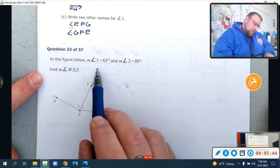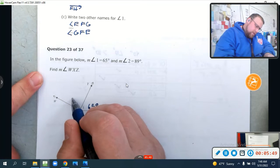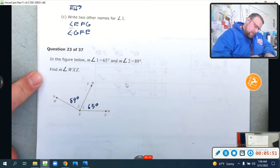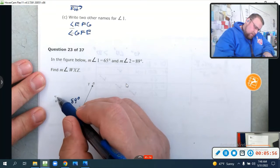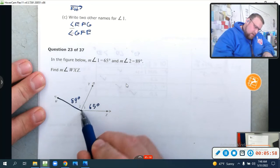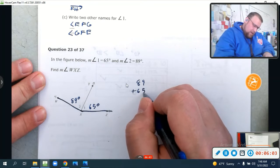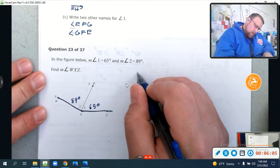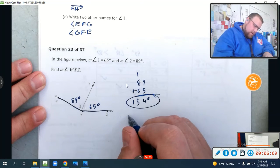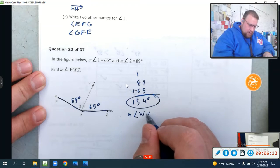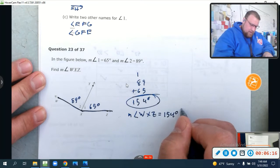In the figure below, the measure of angle 1 equals 65 degrees. Measure of angle 2 equals 89 degrees. Find the measure of angle WXZ. Oh, the whole thing. Just add them up. 89 plus 65. Let's see. 154 degrees. So, the measure of angle WXZ equals 154 degrees.